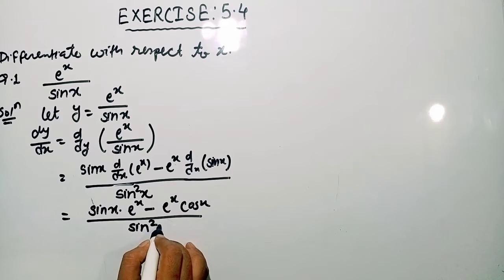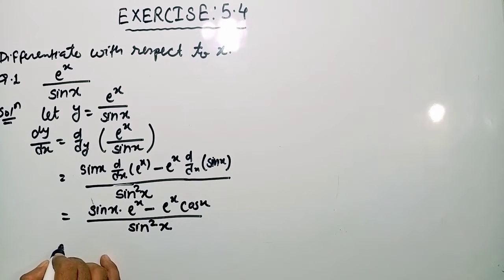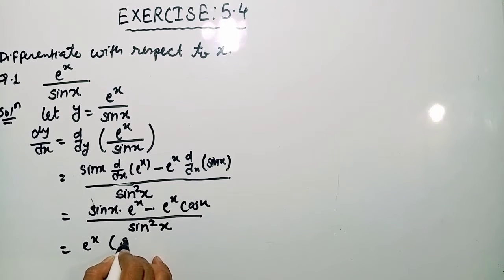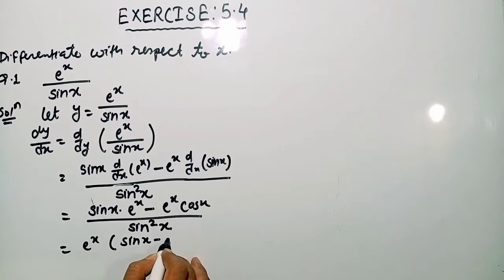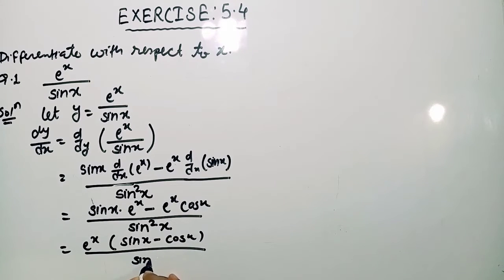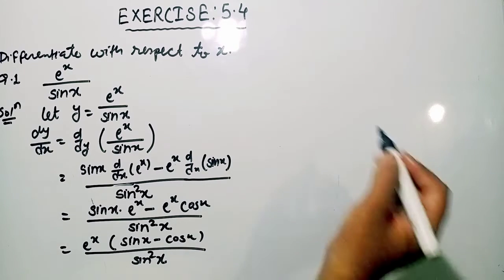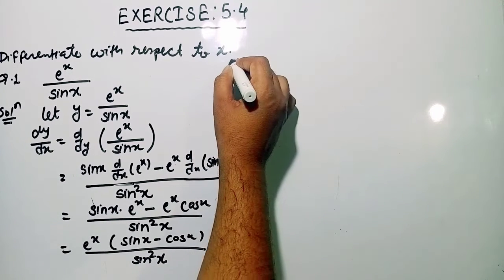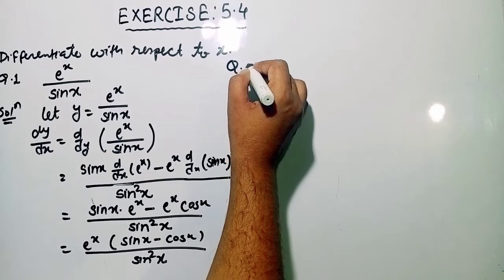Now friends, here you can see that e raised to the power x is common. So we are getting e raised to the power x into sin x minus cos x, divided by sin square x.